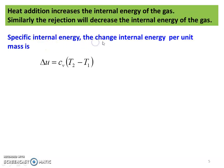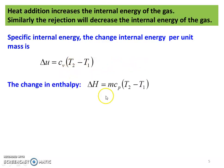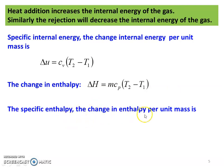The specific internal energy — that is, the change in internal energy per unit mass — is: Δu = Cv(T2 − T1). The change in enthalpy is: ΔH = MCv(T2 − T1), and the change in specific enthalpy, which is the change in enthalpy per unit mass, is given by: Δh = Cp(T2 − T1).